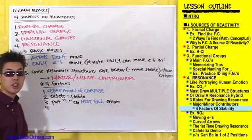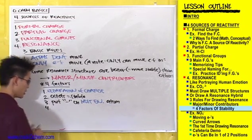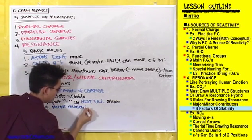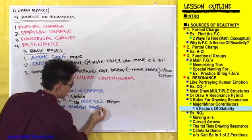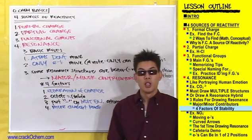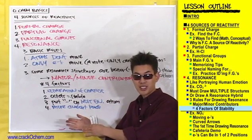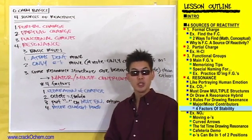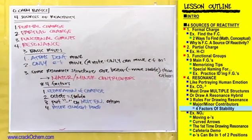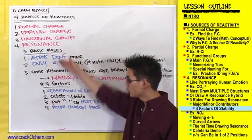Rule number four: the more covalent bonds you have, the more stable the resonance structure — and the more stable the compound. So now you know what resonance structures are and the rules for drawing them. All that's left is to do an example so you can see how all of this applies. Make sure you have the basic rules and the four factors of stability written down.